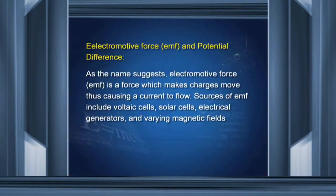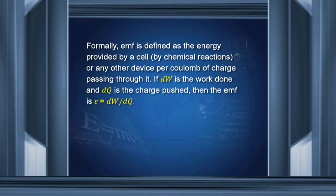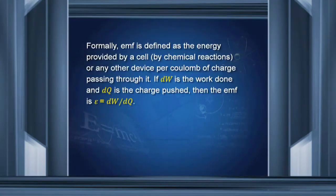Let us now introduce this new term: electromotive force, or EMF, and distinguish it from the potential difference between the two terminals of the battery. As the name suggests, electromotive means it is something that makes the charges move. And what are the sources of EMF? Voltaic cells — for example, the Leclanché cell or the other cells that you have learnt — solar cells, electrical generators, and varying magnetic field. We will learn later that when the magnetic field varies, EMF is produced.